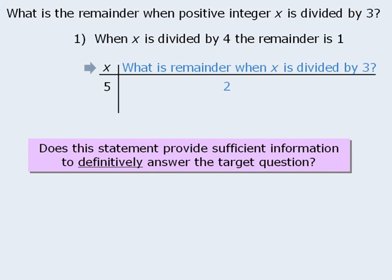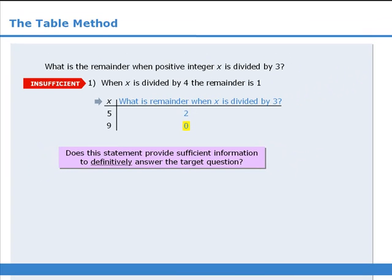What are some other possible values for x? If we get a remainder of 1 when x is divided by 4, then x could also equal 9. What is the remainder when x is divided by 3? Well, when 9 is divided by 3, we get 3 with remainder 0. So the answer here is 0. So when x equals 5, the answer to the target question is 2, and when x equals 9, the answer is 0. Since we cannot definitively answer the target question, statement 1 is not sufficient.